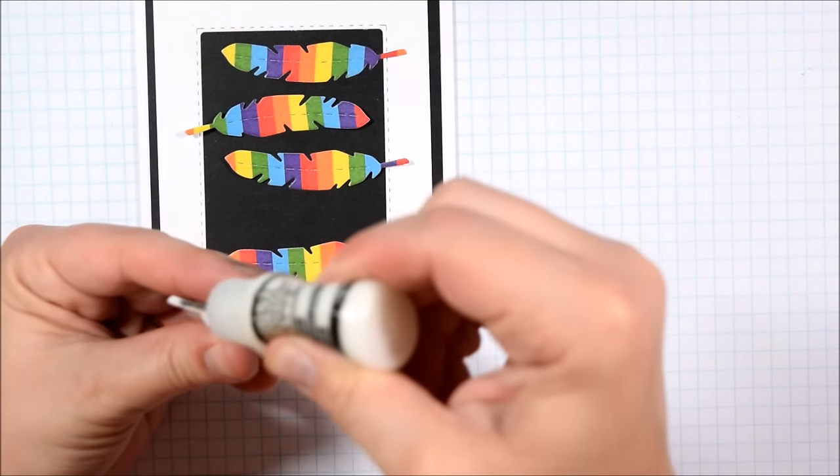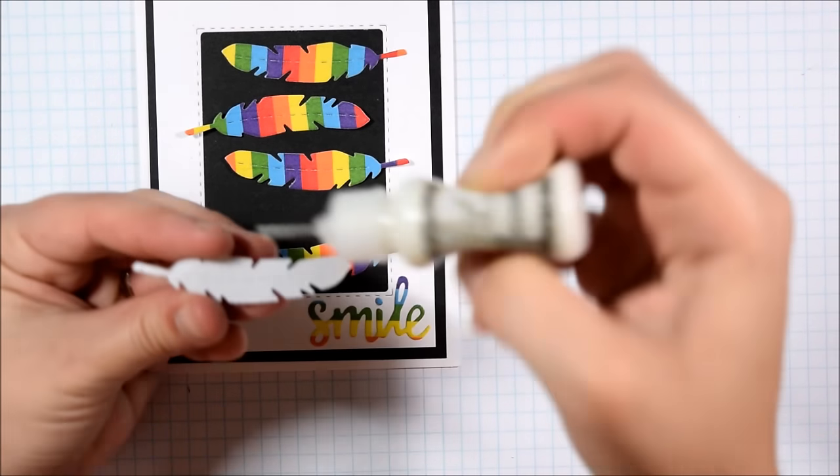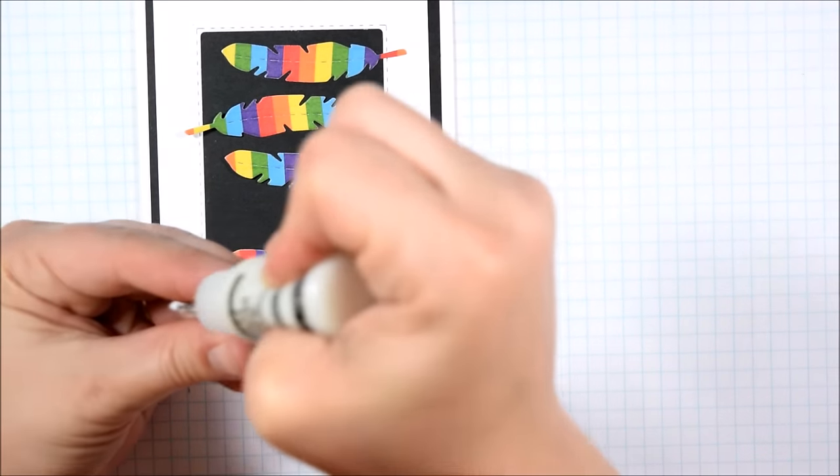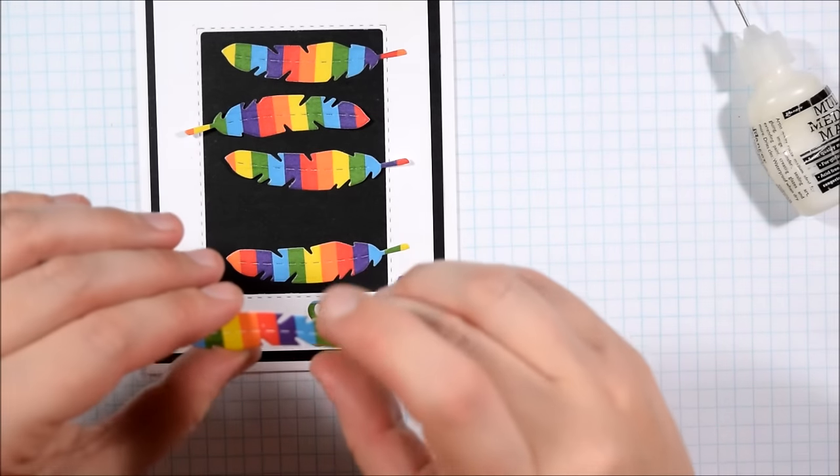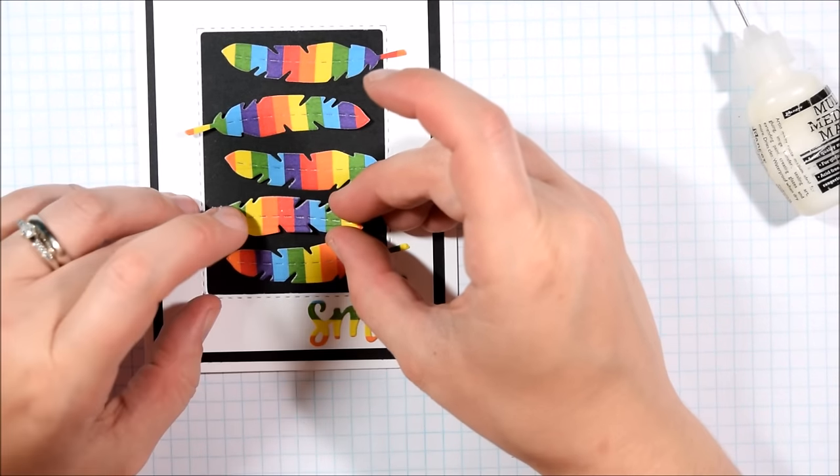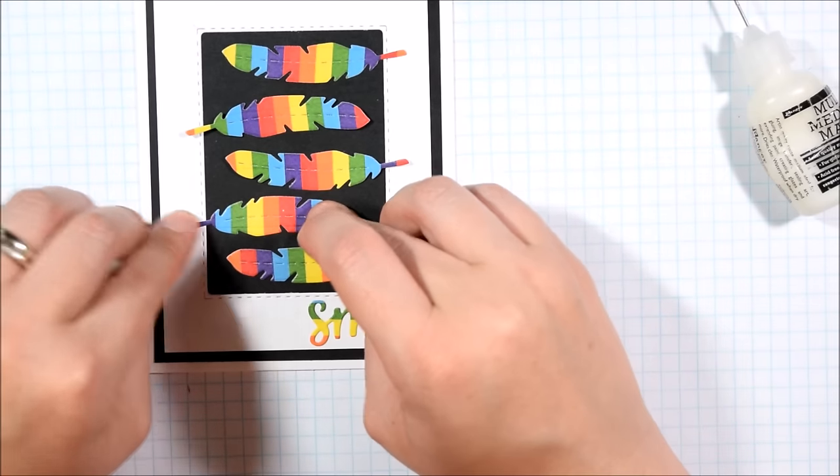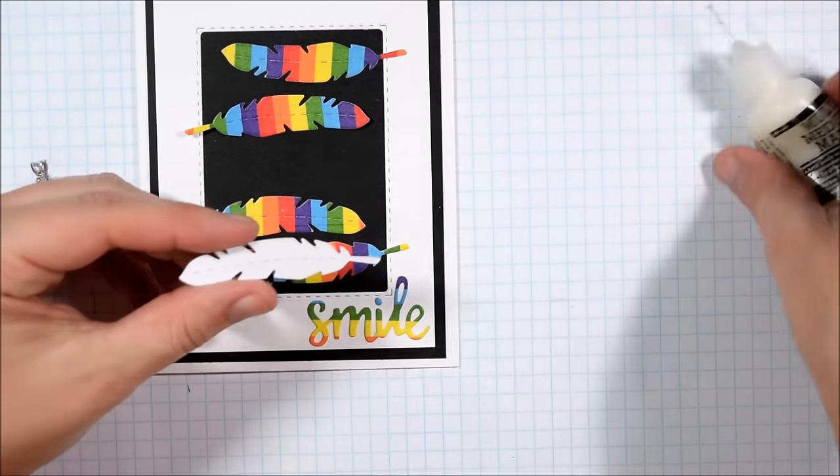Glossy accents work really well to adhere die cuts down as well, but again I think that when a little bit comes out the sides as it would do on those smaller bits, then you're going to be able to see that there.